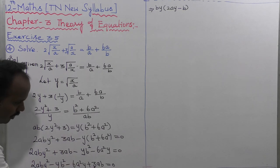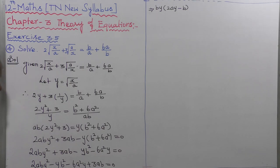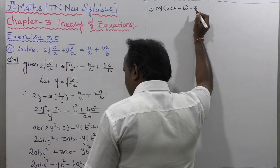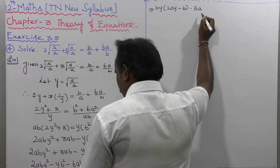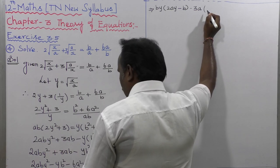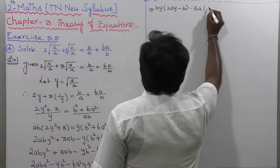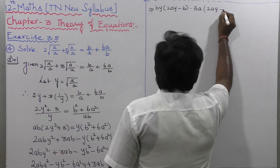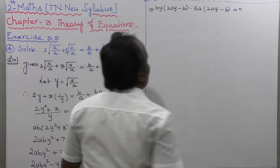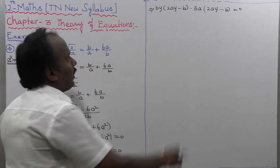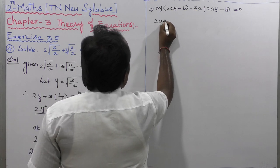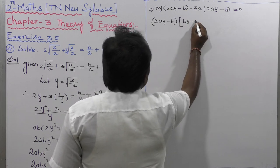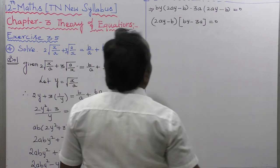For the second two terms, the common values are 3 and A. So taking 3A as common, remaining value is 2Y minus B. That means: BY(2AY minus B) minus 3A(2AY minus B) equals 0. This is now factorized. The common factor of these two terms is (2AY minus B), giving: (2AY minus B)(BY minus 3A) equals 0.